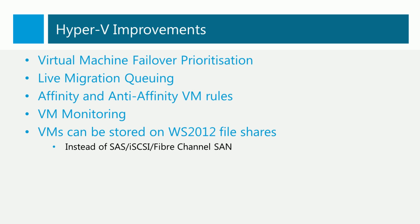Affinity and Anti-Affinity VM rules allow us to configure rules to keep virtual machines either on the same node — for example, if they're on a private virtual switch — or on different nodes — for example, if they're in a guest cluster.